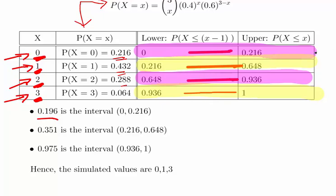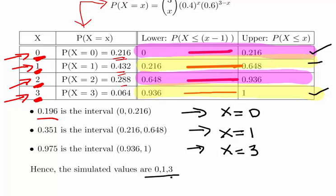We determine which bin each of our three uniform numbers falls into. 0.196 falls into the first bin, giving us x equals 0. 0.351 falls into the second bin, so x equals 1. 0.975 is in the interval 0.936 to 1, so that's x equals 3. The simulated values are 0, 1, and 3.